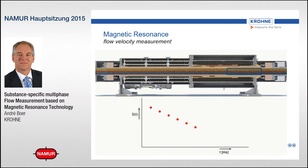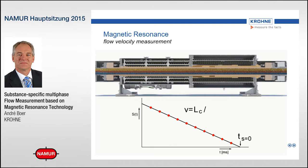By means of these RF signals, we can detect and learn more about where those protons were attached to. We can tag certain protons in the measurement section by sending out a special RF pulse first. Every subsequent RF pulse, we are interrogating the number of tagged protons still inside the measurement section. Less and less tagged protons remain because of the flow — in other words, the amplitude decreases over time, and this decreasing amplitude tells us the flow velocity of these tagged hydrogen protons.